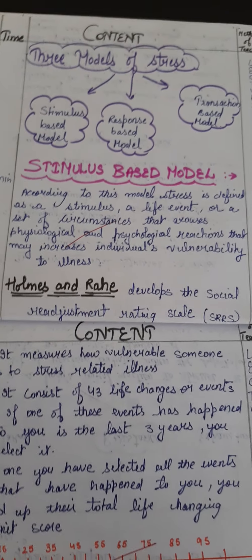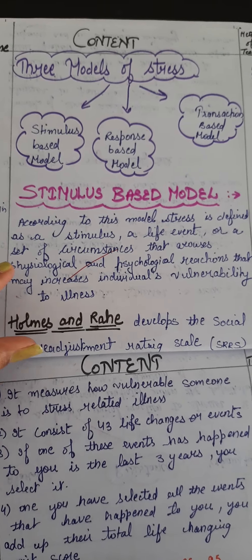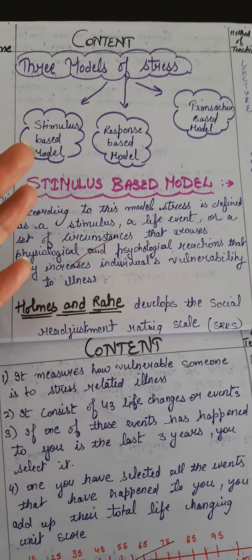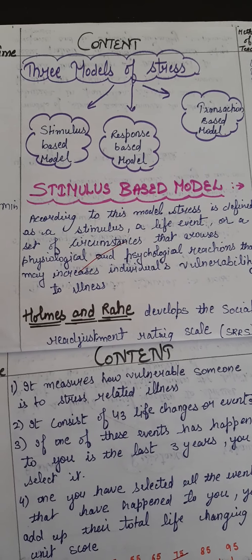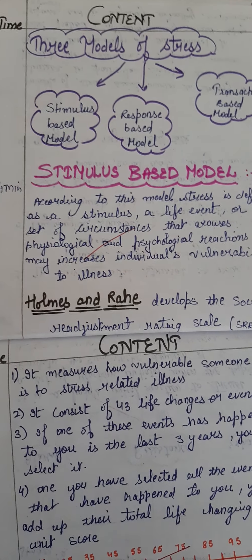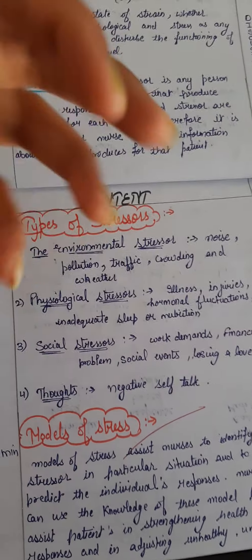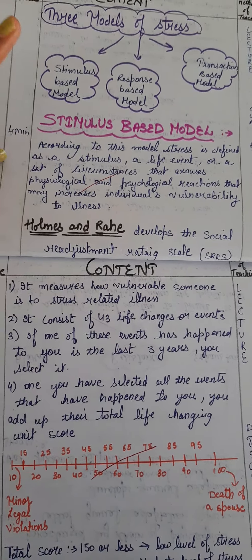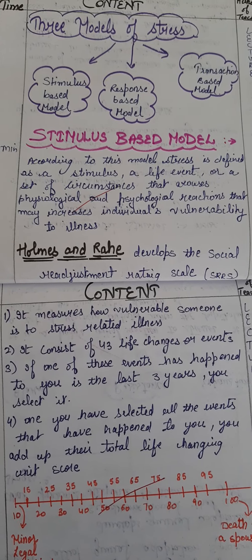How does the nurse or physician know the level of stress the patient is suffering from? There are three models of stress: stimulus, response, and transaction. The stimulus model — stimulus refers to the stressor, which stimulates further stress. The stimulus-based model is mainly defined as a stimulus, life event, or set of circumstances that arouses physiological and psychological responses.